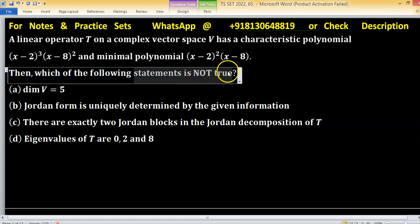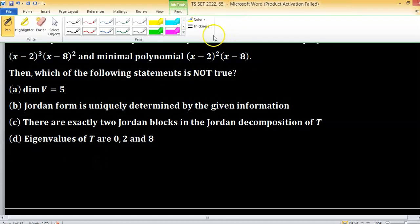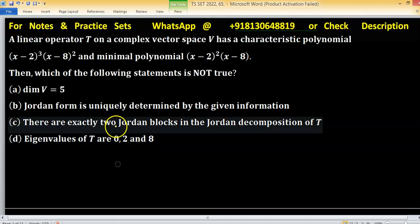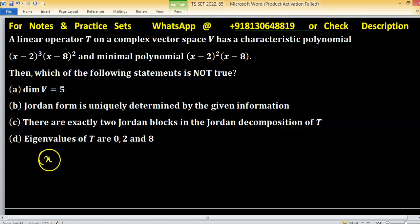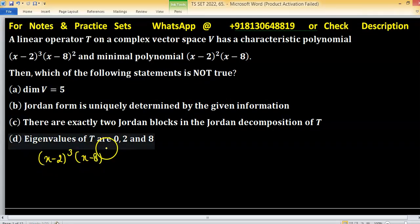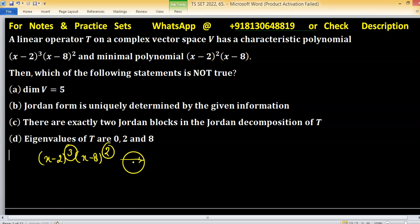The characteristic polynomial is (x - 2)³(x - 8)². The sum of powers from the characteristic polynomial is 5, that's why the matrix representation of this linear transformation is of size 5.